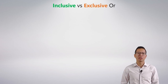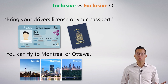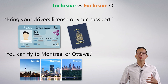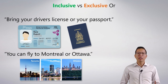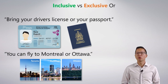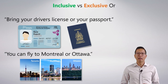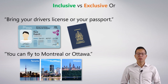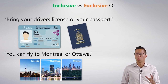Here are two sentences to look at. One says: bring your driver's license or your passport. The other says: you can fly to Montreal or Ottawa. Both are disjunctions — both are 'or' statements — but they seem to have a different meaning. In the first one, if someone told me that and I showed up with both my driver's license and passport, they wouldn't get upset. But if I was buying an airline ticket and the person said you can fly to Montreal or Ottawa, and I said 'great, I'll fly to both at the exact same time,' they would say sorry, you can't do that — you have to pick one or the other.